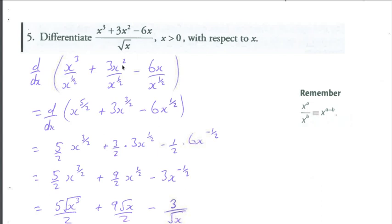3 multiplied by x squared divided by x to the half would be 3 multiplied by x to the 4 halves minus 1 half, which is 3x to the 3 halves. Minus 6x or 6x to the 1 divided by x to the half would be 6x to the 2 halves minus 1 half, which is 6x to the power 1 half.